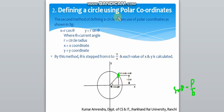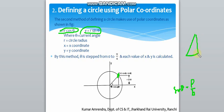The second method of defining a circle makes use of polar coordinates. The equations are x = r cosθ and y = r sinθ, where r is the hypotenuse in the triangle formed at each point on the circle.